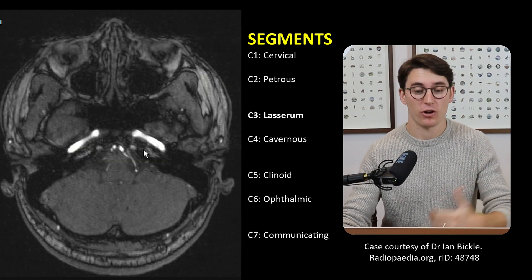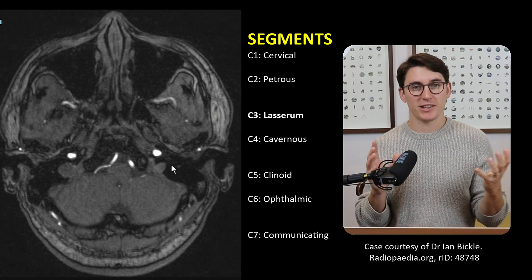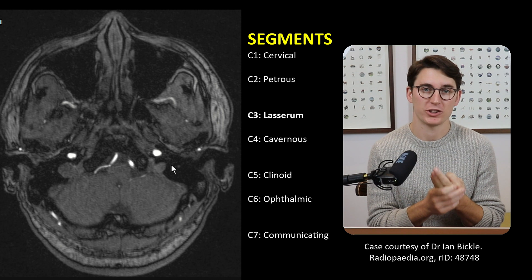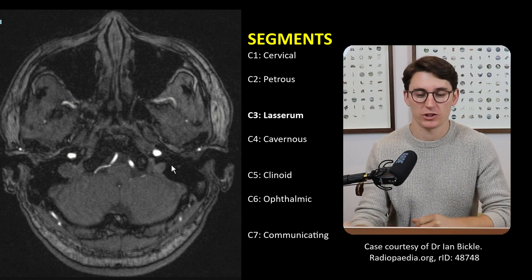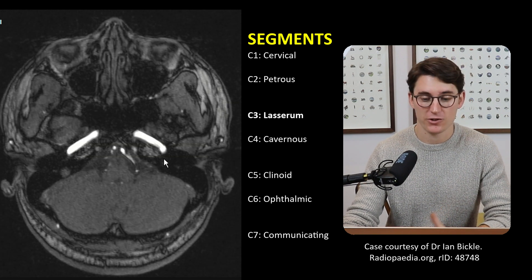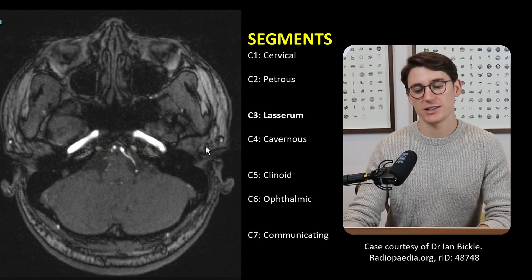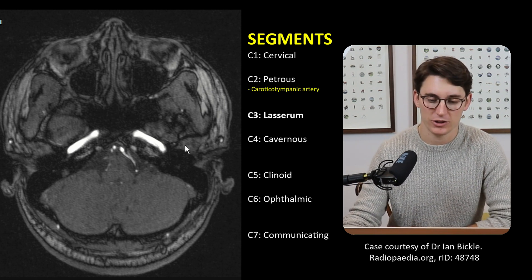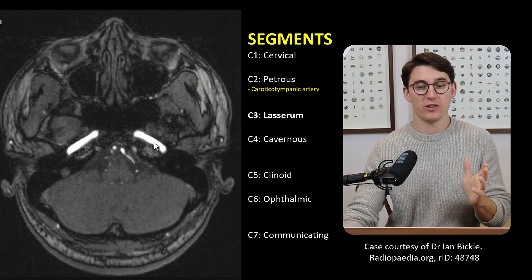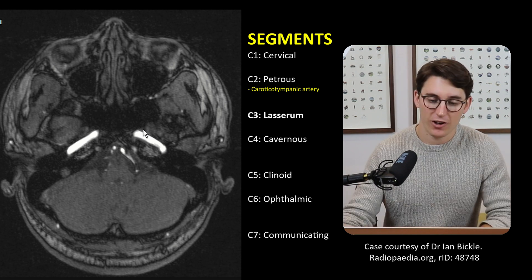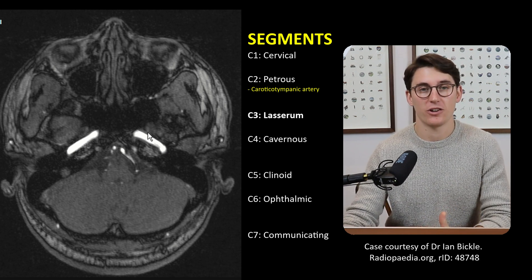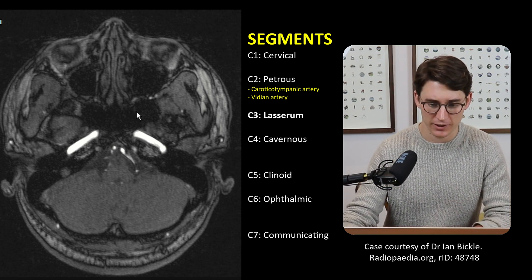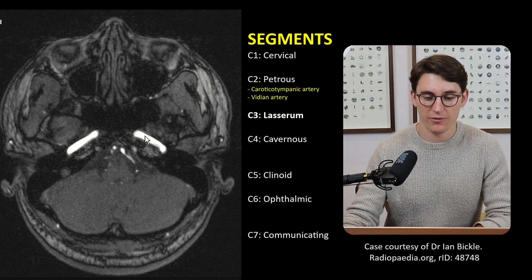Now, some of these segments have branches coming off them. It's nice to remember that the even segments — C2, C4, and C6 — each have two branches coming off, and then C7 has a couple of its own branches. So let's go to segment C2, the petrous section. Lateral to this is the tympanic membrane, which helps us remember our first branch: the carotico-tympanic branch. The second branch, which we can't actually see on the scan, is called the vidian artery, coming off through the vidian canal into the pterygopalatine fossa. Not everyone has this artery, but that is our second branch of C2.